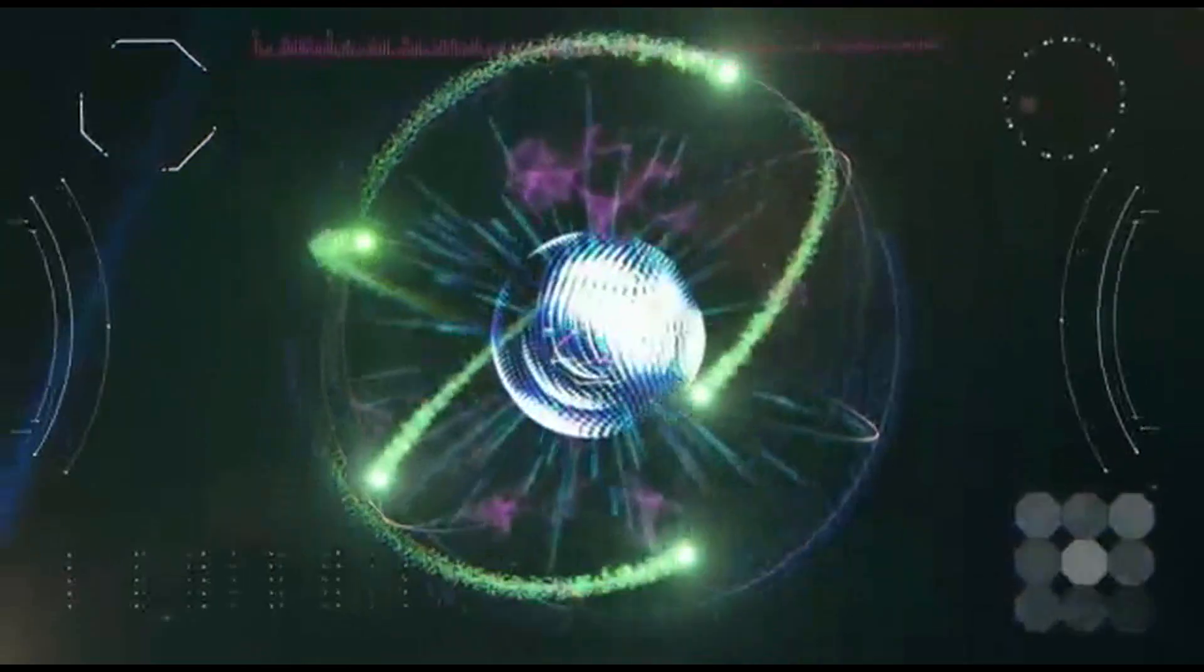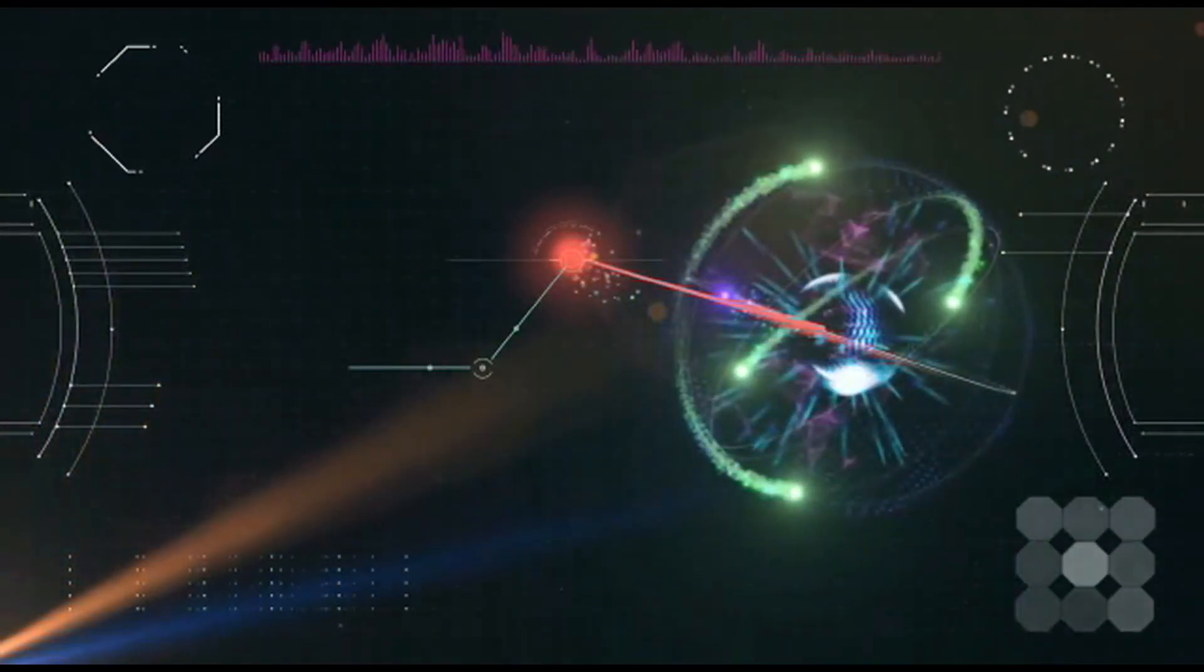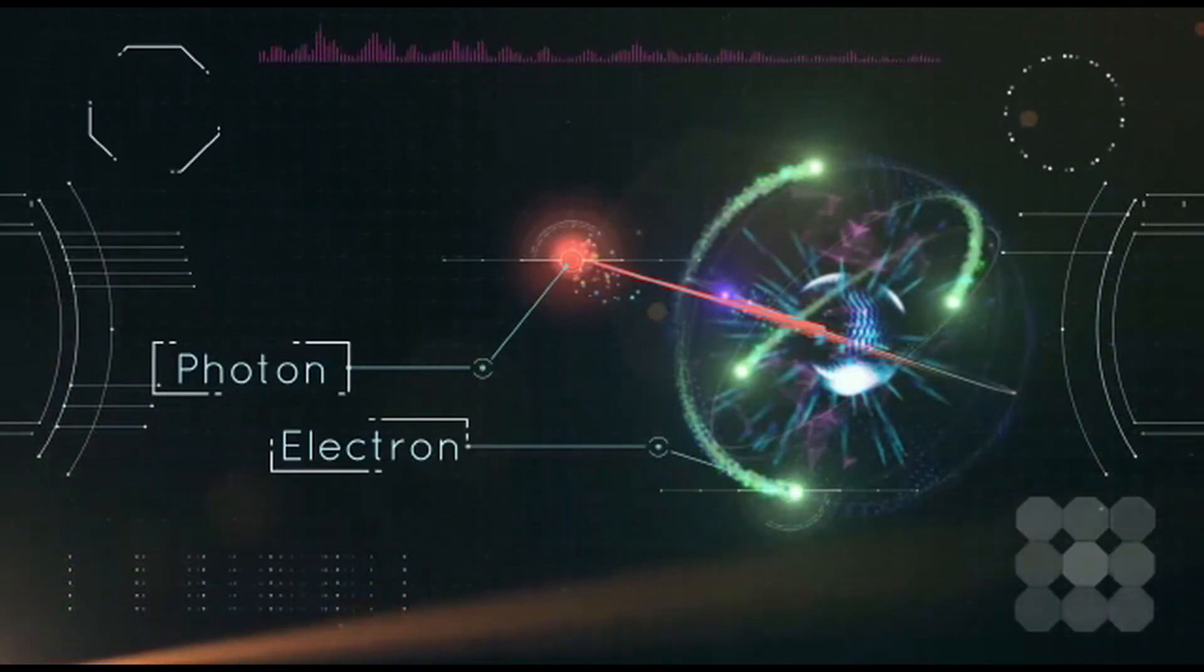When the electron is excited, it emits a photon. The motion of the photon is affected by the motion of its source, the electron, and must include both types of motion of its source.